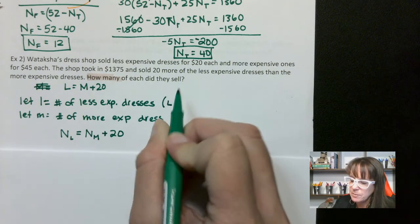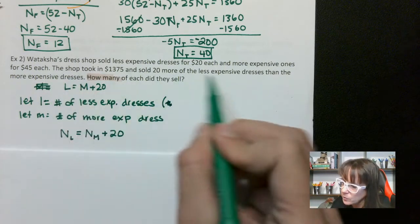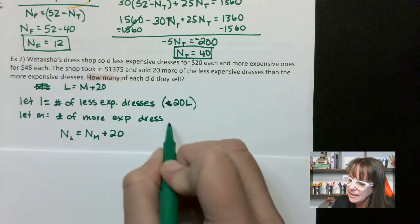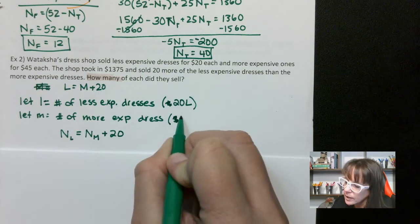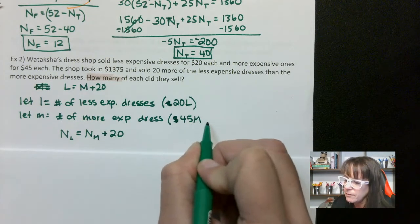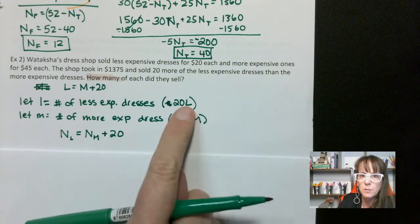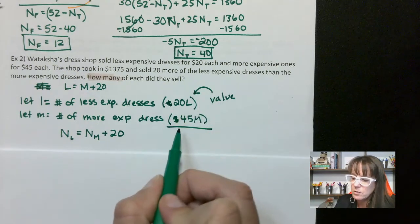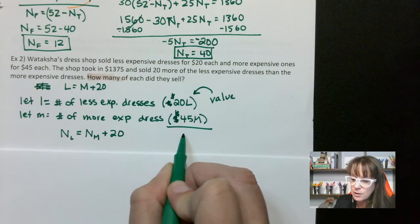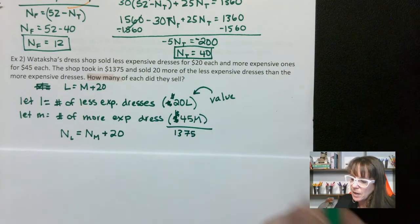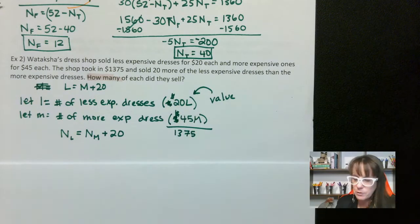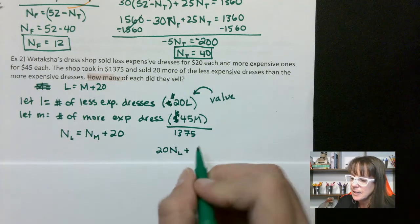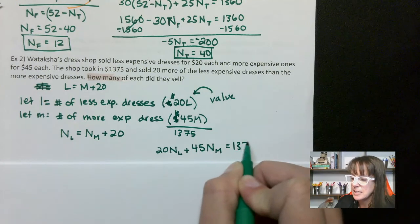We take $20 and multiply it by the number of dresses L. And then $45 for the more expensive dresses times M. Of course we'll use subscripted variables. This is our value in dollar amount — and you can write dollar signs in there — which equals $1,375. So: 20 times N sub L plus 45 times N sub M equals 1,375.